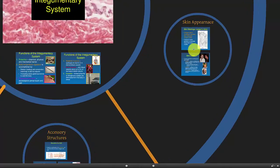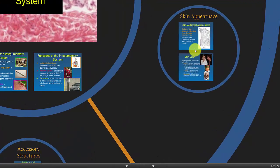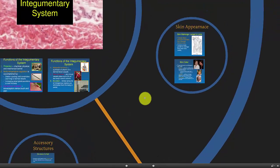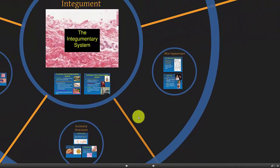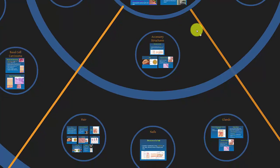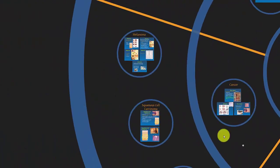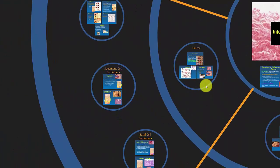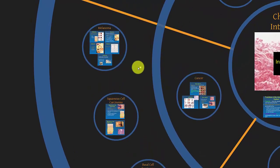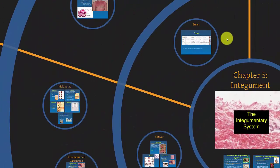We'll look at skin appearance — things like skin markings, Langer lines, and skin coloring. We'll look at accessory structures: glands, nails, and hair. Then we'll look at cancer — the three main types of skin cancer: basal cell carcinoma, squamous cell carcinoma, and melanoma.